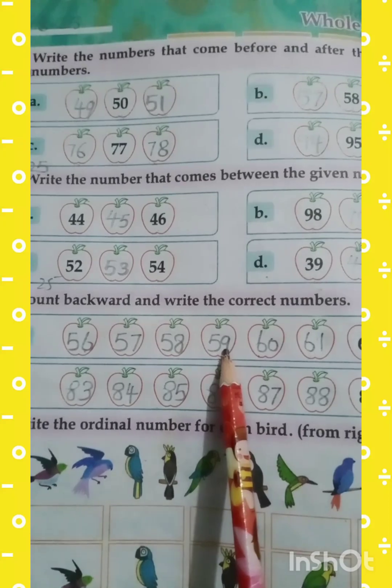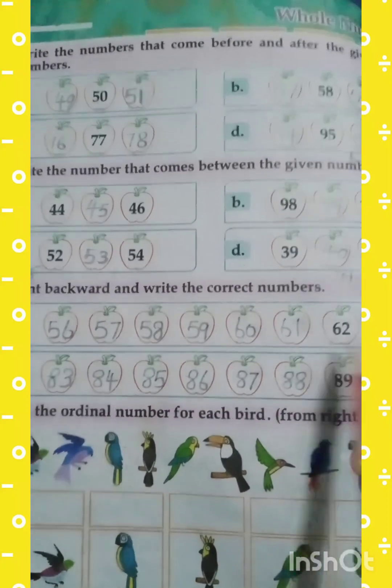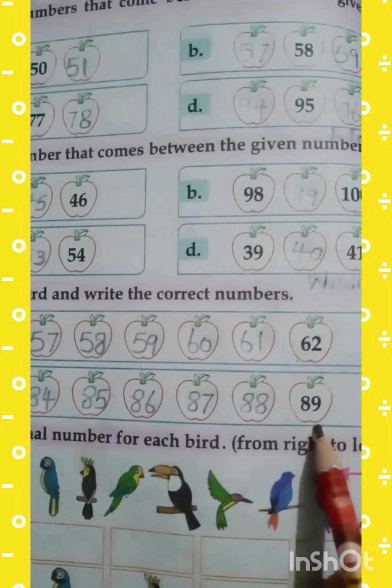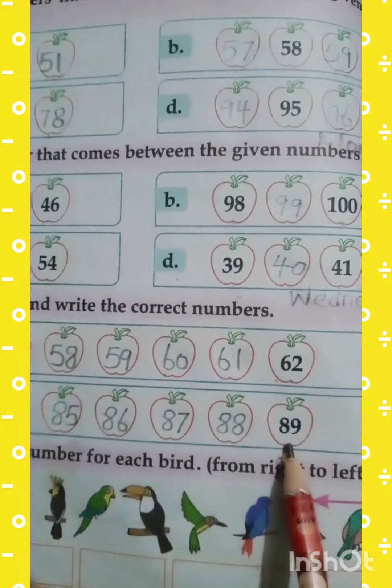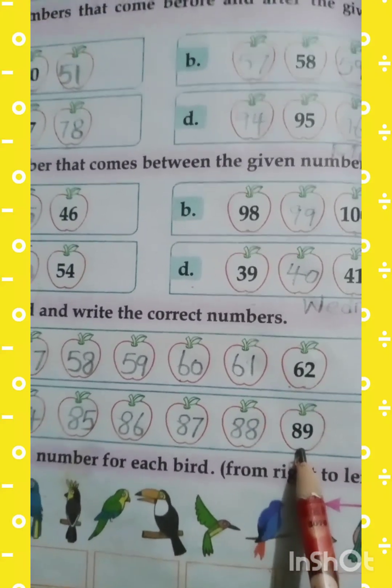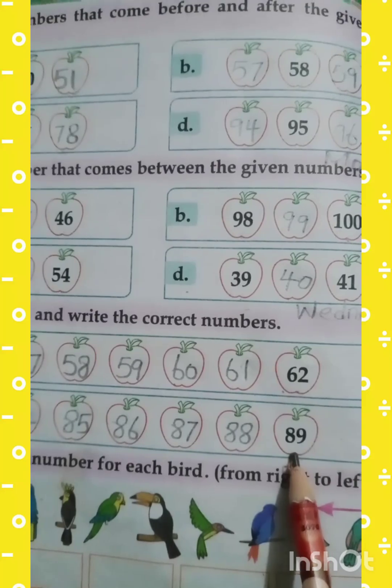These numbers are called backward counting. The next line, here you can see the number 89 in the apple. What comes before number 89?